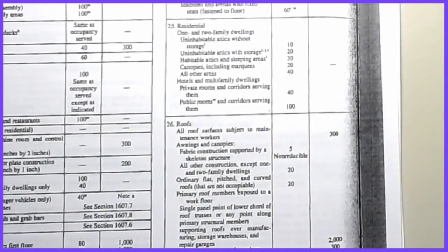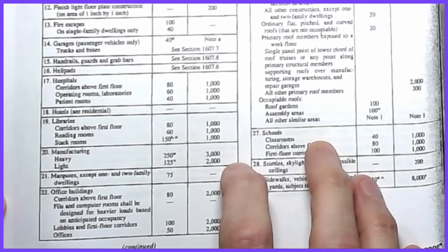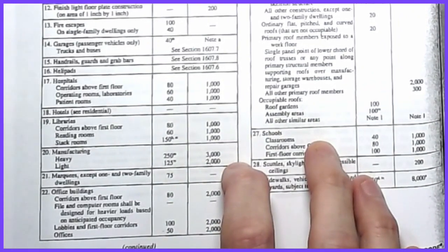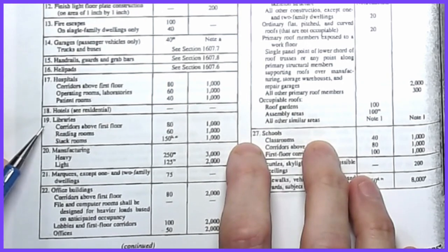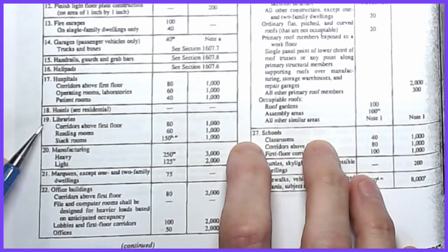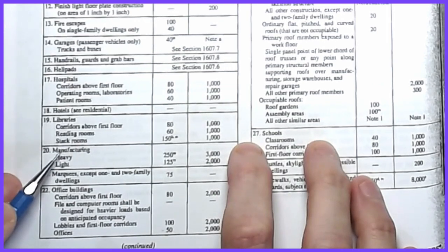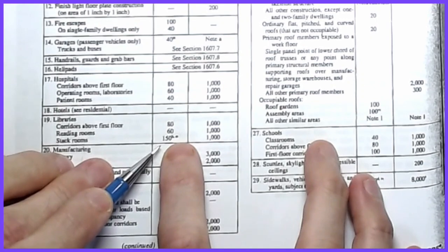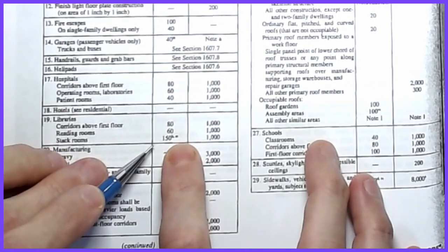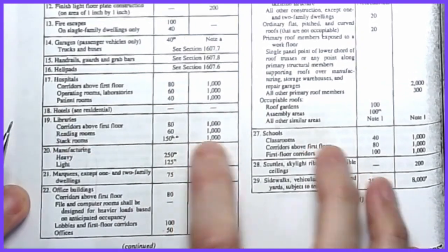Some of the bigger load categories to be aware of include libraries — lots of books means high loads. In stack rooms or repositories, loads can reach 150 psf or even higher. There are photos of three-story-tall library stacks in Cincinnati where 150 psf probably wouldn't be enough. Notes in the code address these special cases, so you'd want to look into them.